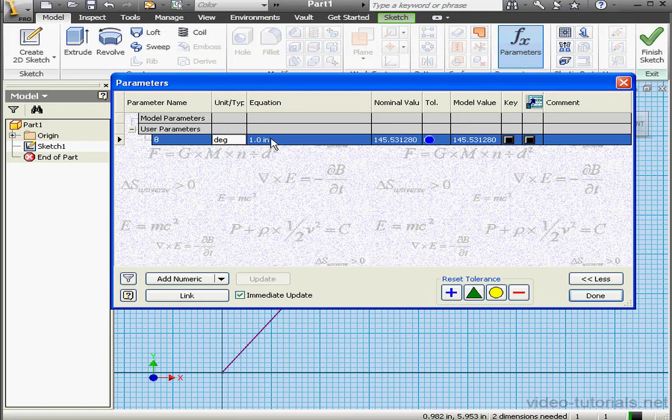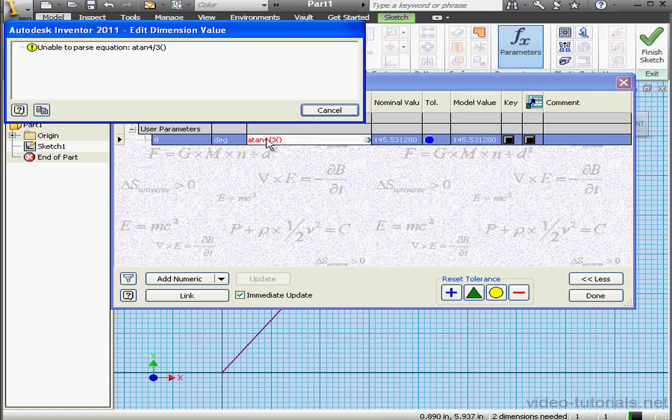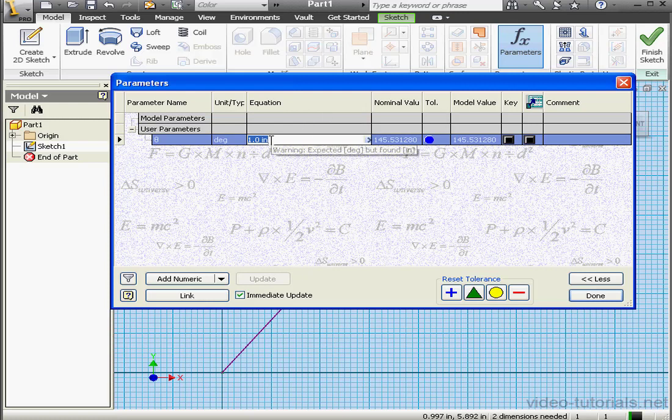Now we'll enter an equation: atan, then the argument. We enter the argument inside parentheses, 4 over 3. Oops, I entered the argument outside of the parentheses. Let's get 4 over 3 inside those parentheses. And click outside to register. Our result is 53.13 degrees.